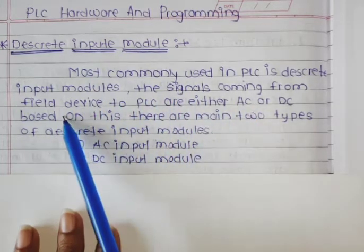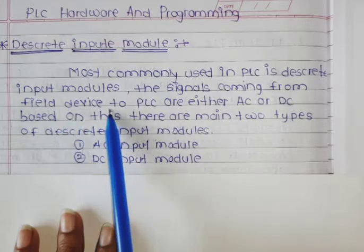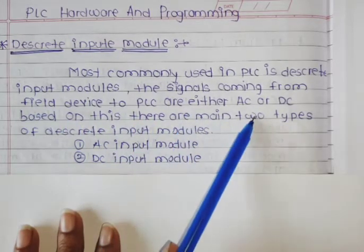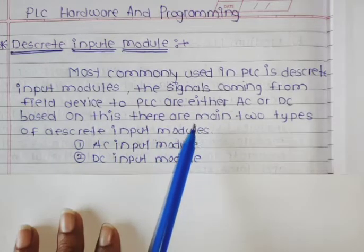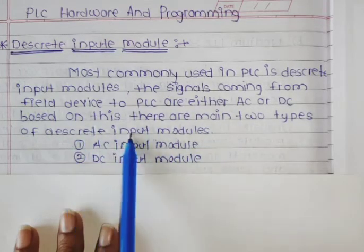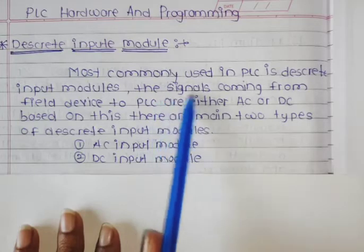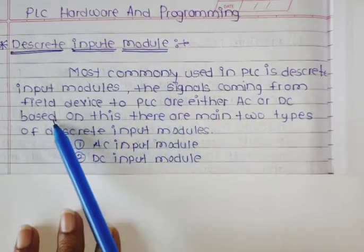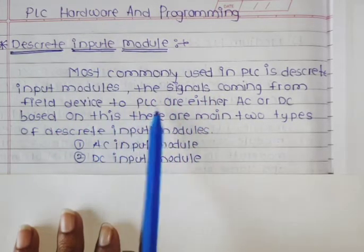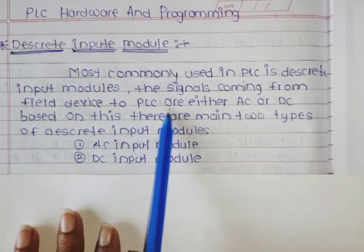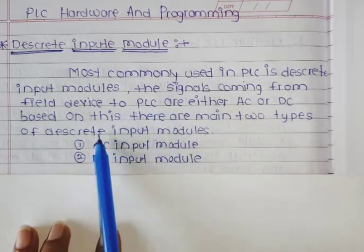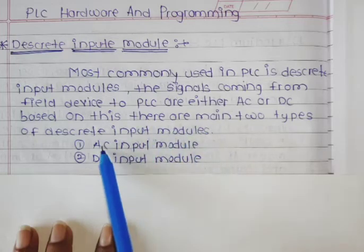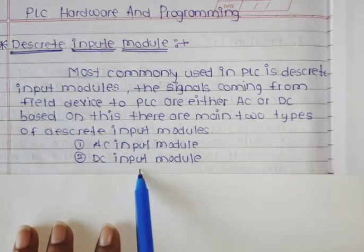The signals coming from the field device to the PLC are either AC or DC. Based on this, there are two main types of discrete input module. The signal that comes from field devices to the PLC can be AC or DC, which determines whether we use an AC input module or a DC input module.